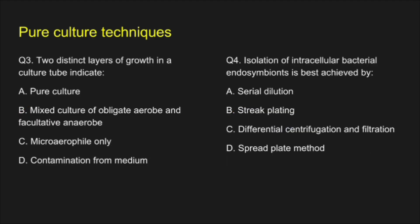Question 3. Two distinct layers of growth in a culture tube indicates — A. Pure culture, B. Mixed culture of obligate aerobes and facultative anaerobes, C. Micro aerophile only, D. Contamination from medium. The correct answer is B.